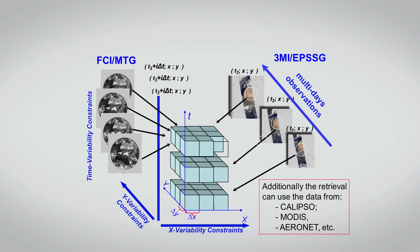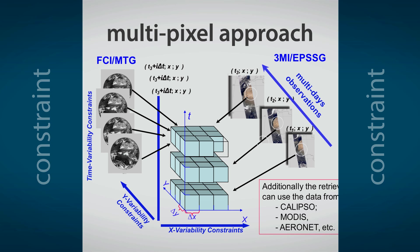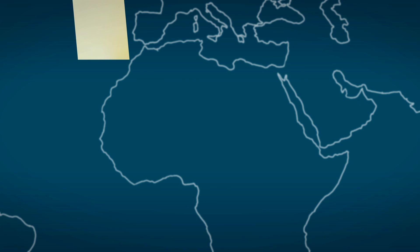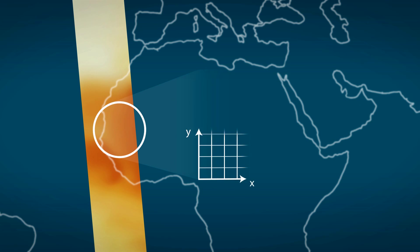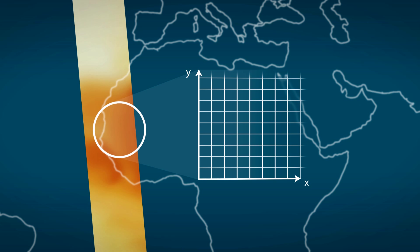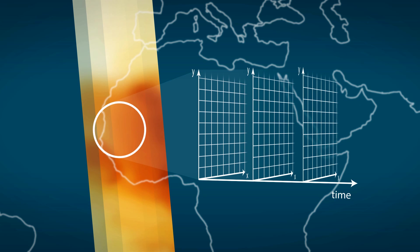GRASP uses an innovative multipixel approach that takes advantage of two extra constraints coming from observations. Aerosols have limited horizontal variability and surface properties change slowly with time.